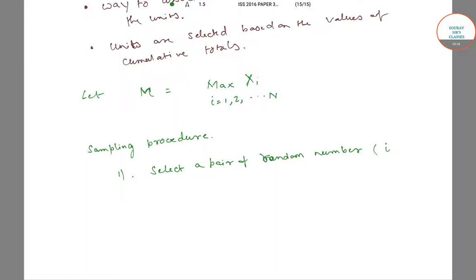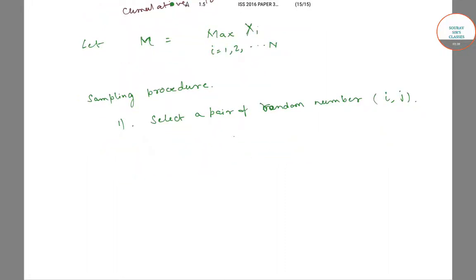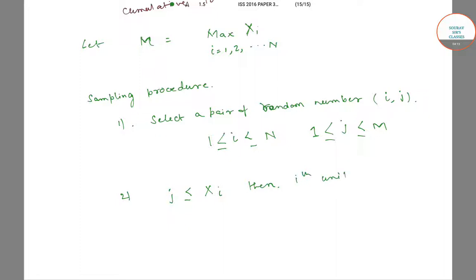Let the selected pair be denoted by i and j, such that i lies between 1 and capital N, and j lies between 1 and capital M. If j is less than or equal to xi, then the ith unit is selected. Otherwise, it is rejected.